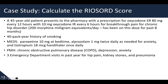Let's look at a case study and calculate the RIOSORD score. We have a 45-year-old patient who presents to the pharmacy with a prescription for oxycodone extended release 80 mg every 12 hours with 10 mg of immediate release oxycodone every six hours for breakthrough pain for a chronic hip disorder — approximately 200 morphine milligram equivalents per day, on this dose for the past eight months. The patient has a 40-pack year history of smoking. Medications include paroxetine 10 mg at bedtime, alprazolam 1 mg twice daily as needed for anxiety, and tiotropium 18 mcg Handihaler once daily. Past medical history is significant for COPD, depression, and anxiety. The patient has had three emergency department visits in the past year for hip pain, kidney stones, and pneumonia.